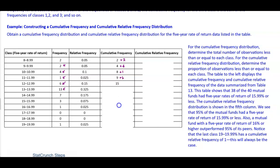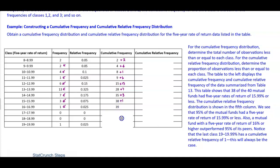The next number is 13, so 15 plus 13 gives us 28. The next frequency is 7, so 28 plus 7 gives us 35. The next number is 3, so 35 plus 3 gives us 38. The next number is 1, so 38 plus 1 gives us 39. The next two frequencies are 0, so 39 plus 0 remains 39. And the last frequency is 1, so 39 plus 1 gives us 40.